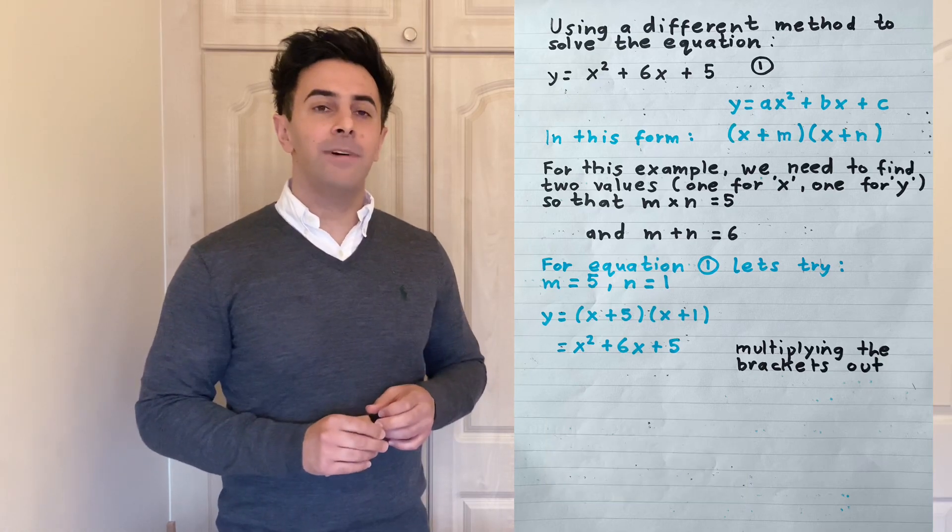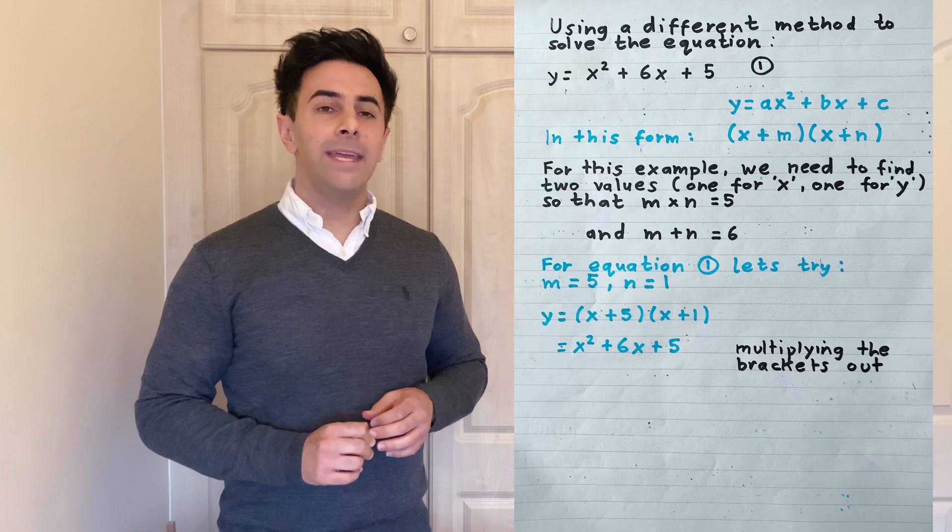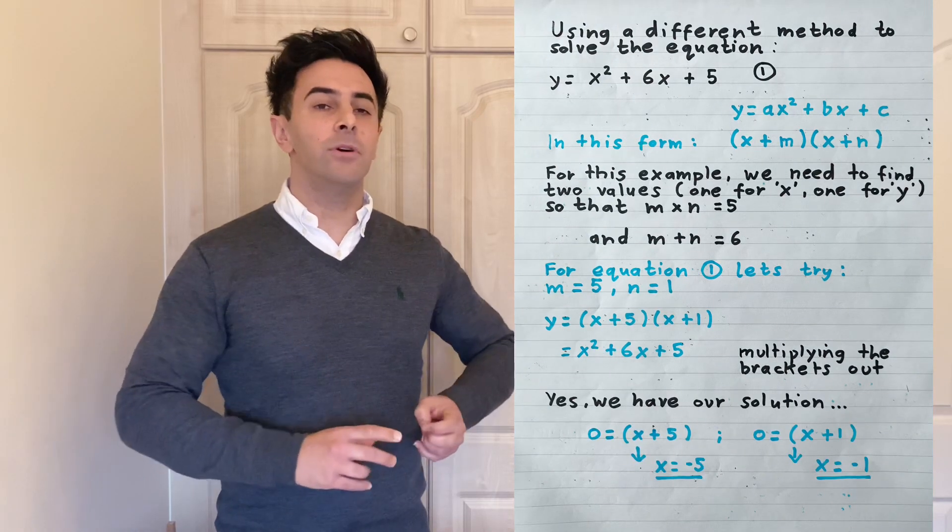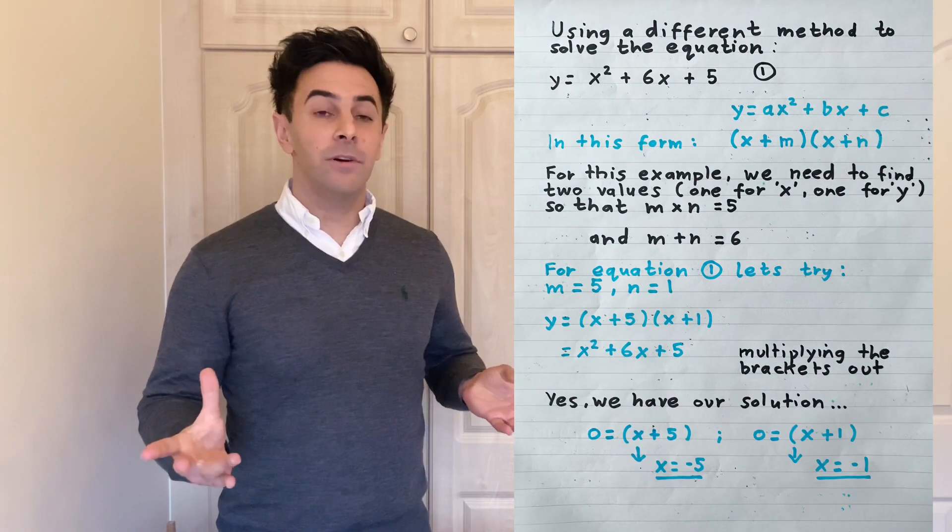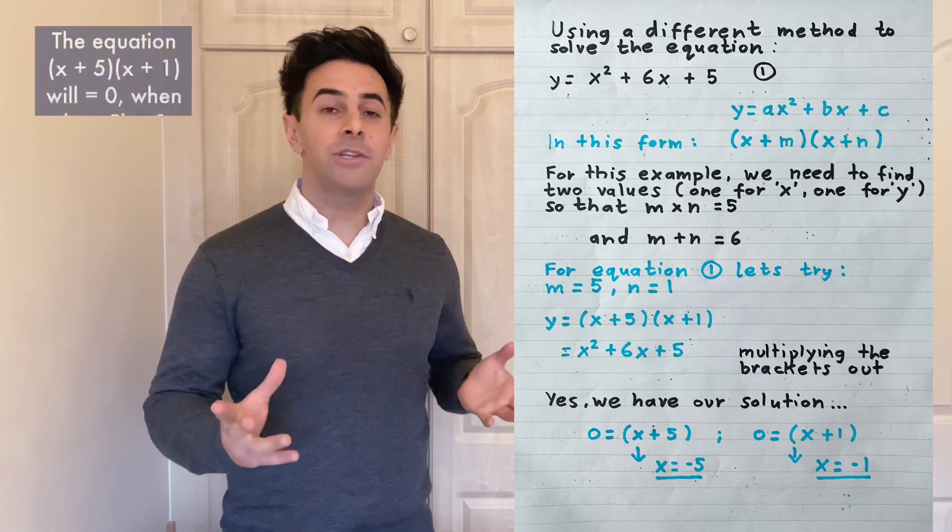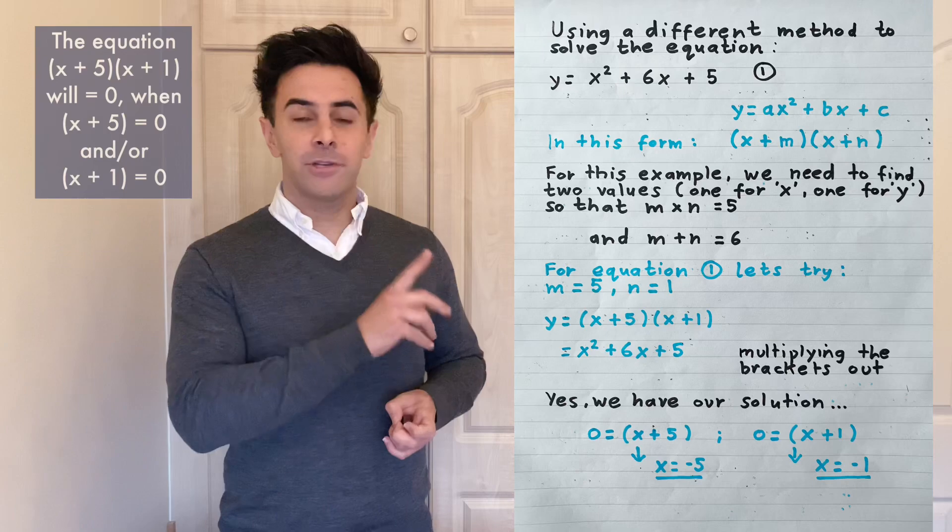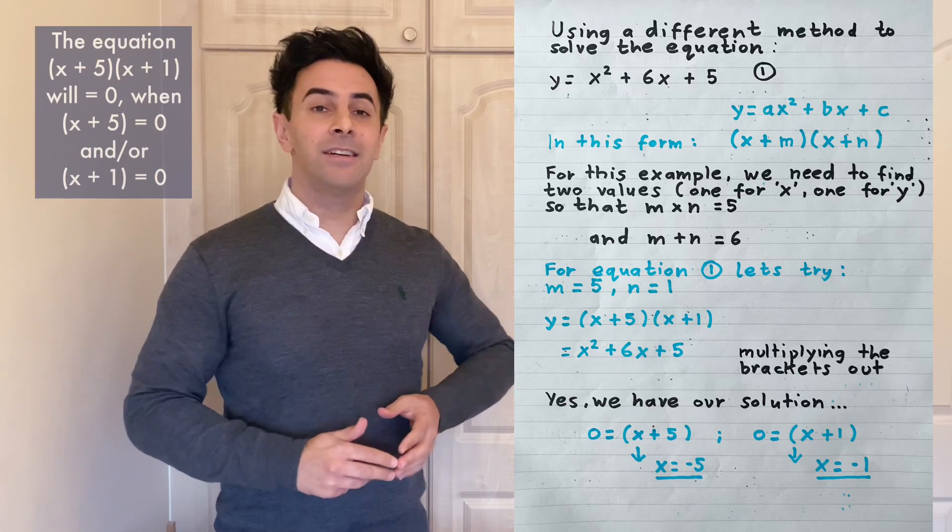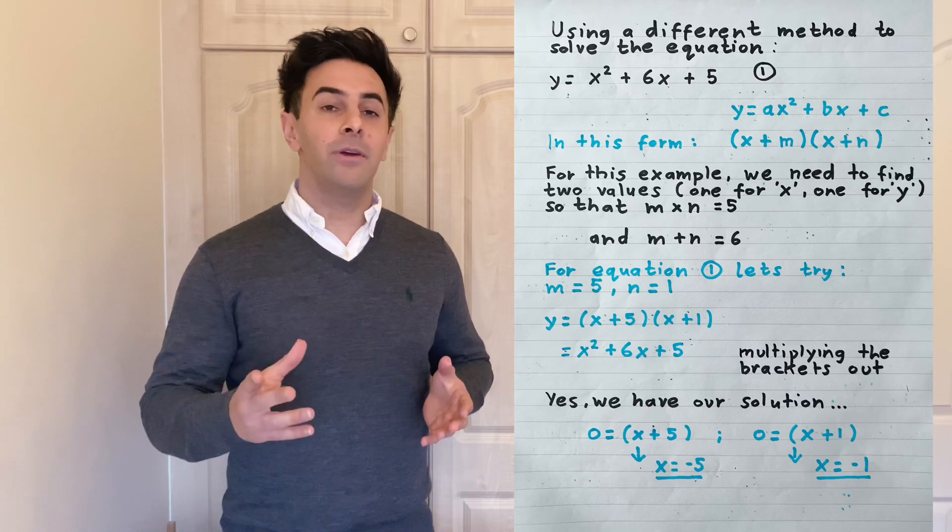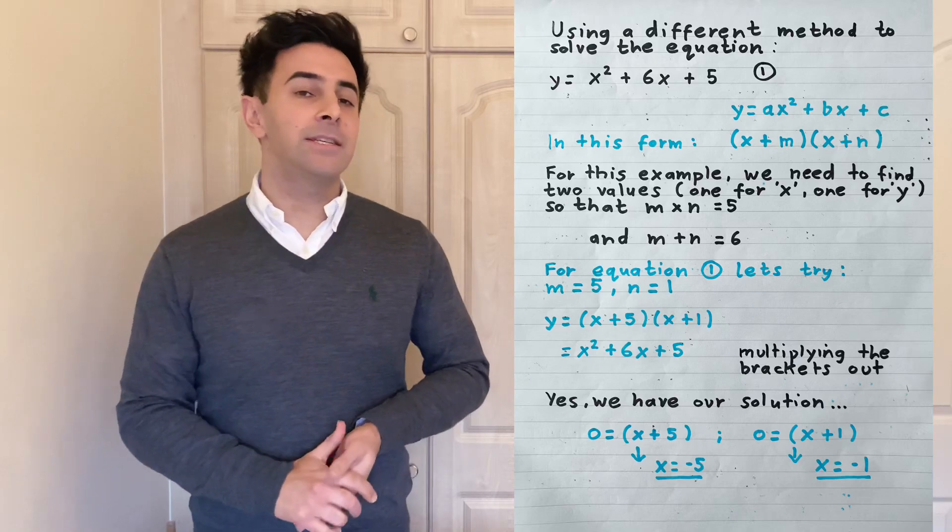If we put the value of y equals 0 in the equation, therefore what must the values of x be? Well, we know 0 times any number is equal to 0. So then we have to have x so that each bracket gives 0. And by doing this we can find that there are two solutions.